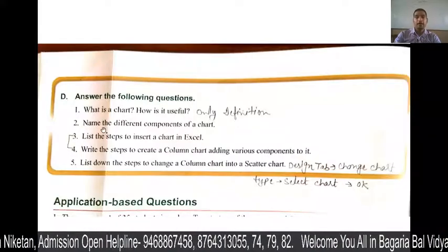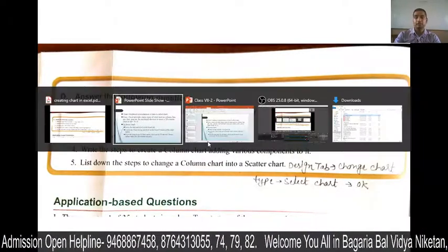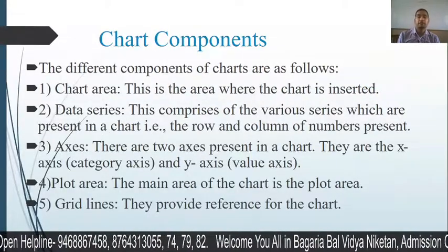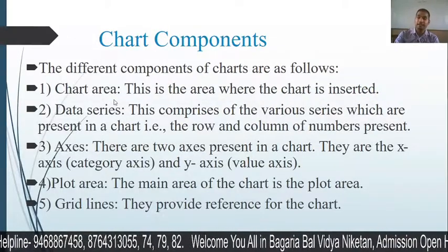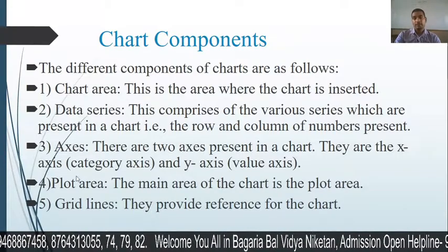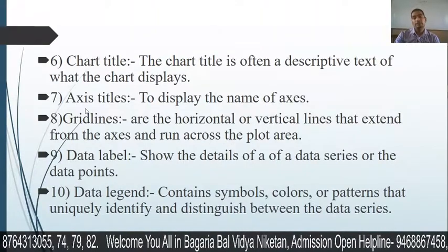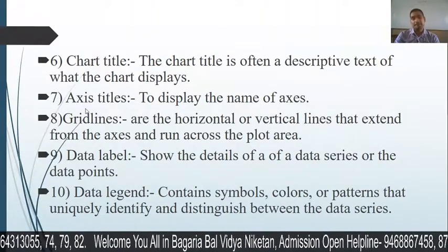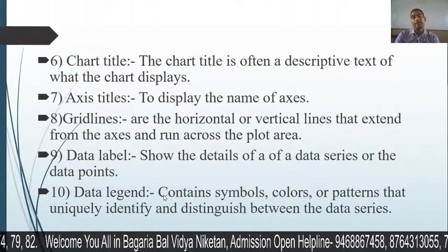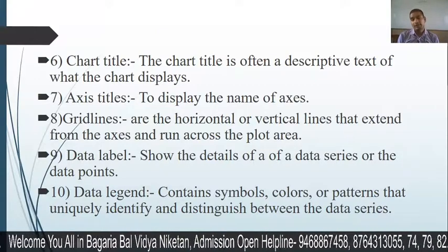Next is: name the different components of the chart. If we talk about the different components of the chart, they are: chart area, data series, axes, plot area, grid lines, chart title, axis title, data label, and data legend.